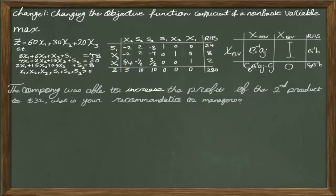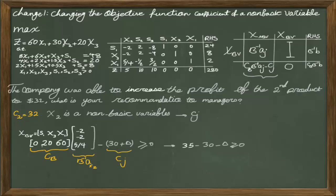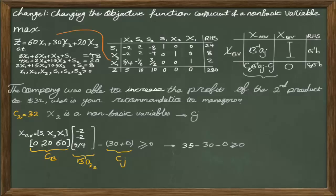Let's recalculate the coefficient of X2 with the proposed change and see whether it's profitable to produce X2, or whether we suggest the same production plan. Currently C2 is 30, but we introduce new C2 equal to 32. Since X2 is a non-basic decision variable, we form the matrix CB — the coefficients of basic variables S1, X3, and X1 in the objective function — which are 0, 20, and 60 respectively.